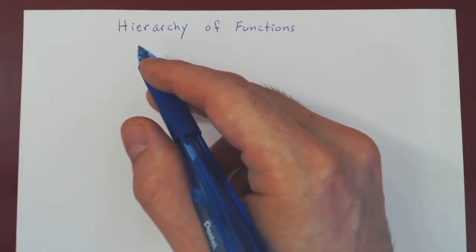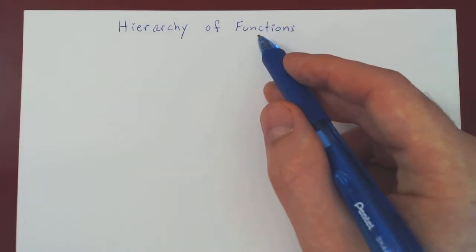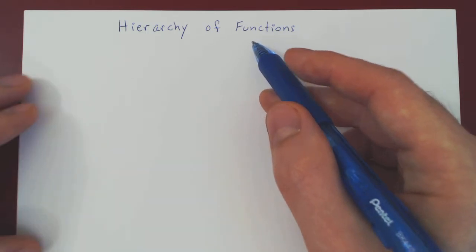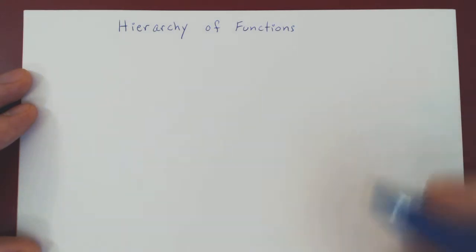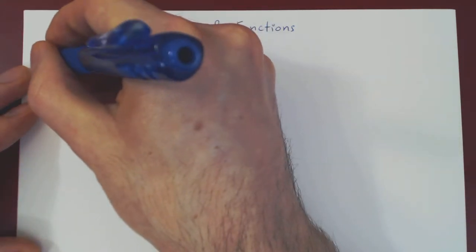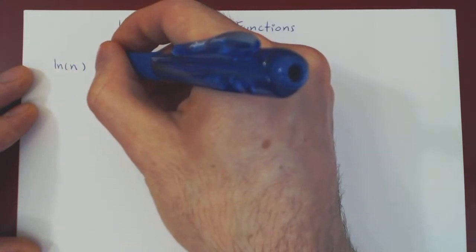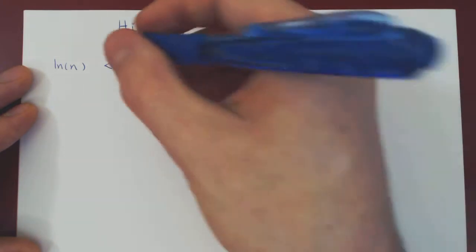In this video, we want to discuss the idea of constructing a hierarchy of functions. The idea is to order functions in increasing order of magnitude. We have the familiar functions — first the logarithmic functions, if you think of ln. And ln is much smaller than power functions.